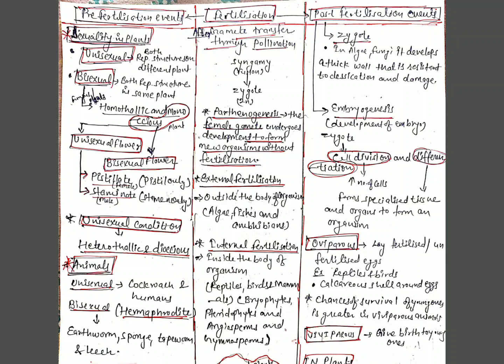If syngamy or fusion of gametes takes place outside the body of the organism — as in algae, fishes, and amphibians — it is known as external fertilization. If syngamy takes place inside the body of the organism — as in reptiles, birds, mammals, bryophytes, pteridophytes, angiosperms, and gymnosperms — it is known as internal fertilization. A major disadvantage of external fertilization is that offspring are extremely vulnerable to predators; that is why organisms with external fertilization show great synchrony between the sexes and release a large number of gametes into the surrounding water.